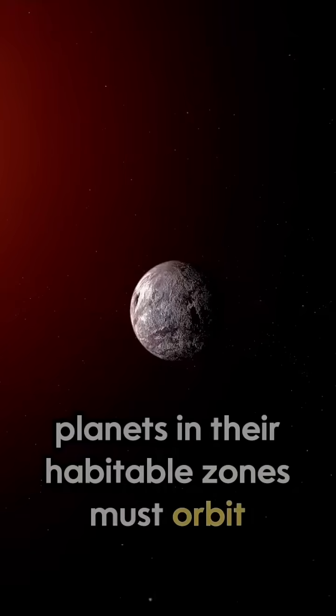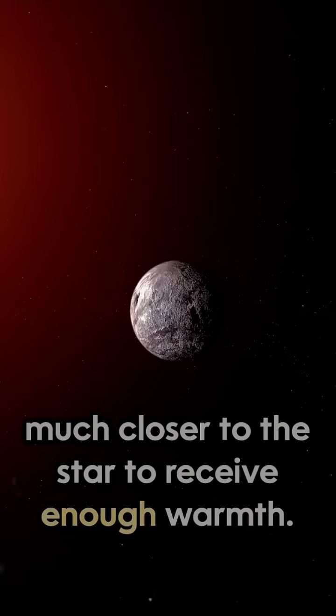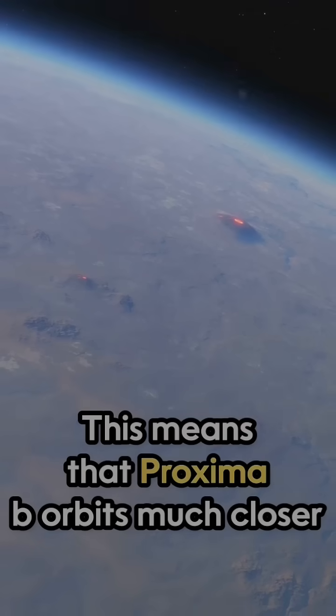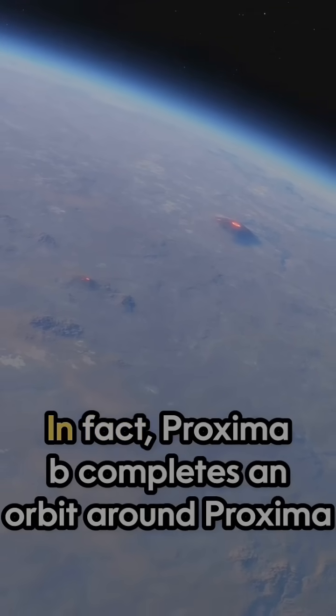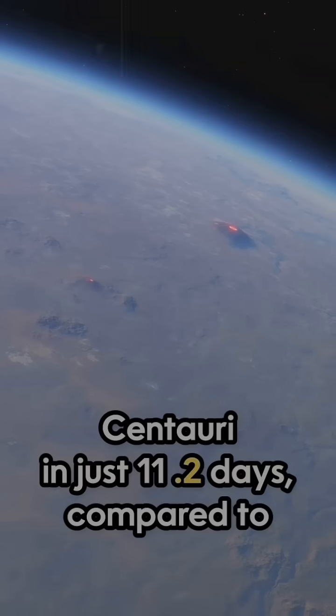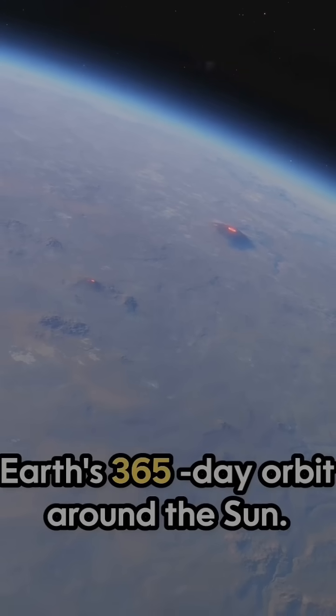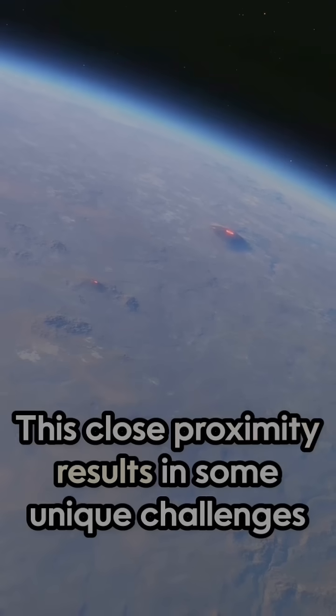Planets in their habitable zones must orbit much closer to the star to receive enough warmth. This means that Proxima b orbits much closer to its star than Earth does to the Sun. In fact, Proxima b completes an orbit around Proxima Centauri in just 11.2 days, compared to Earth's 365-day orbit around the Sun.